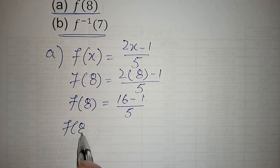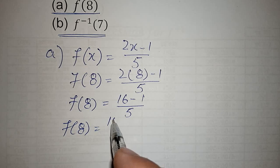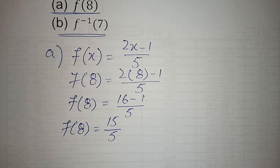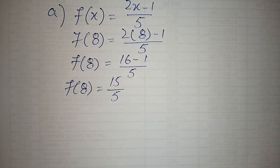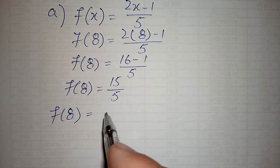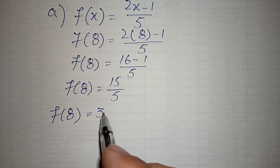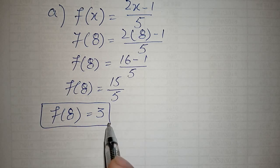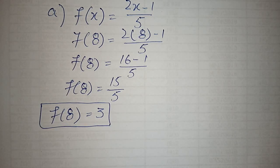f(8) is equal to 15 upon 5. Then f(8) is equal to 3. This is your answer. When f(x) is equal to 2x minus 1 upon 5, then the value of f(8) is 3.